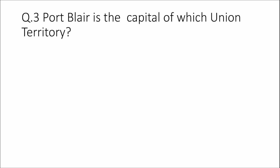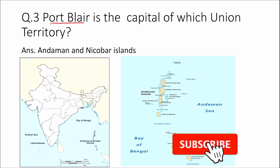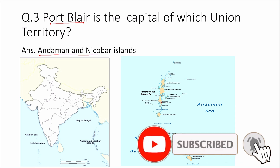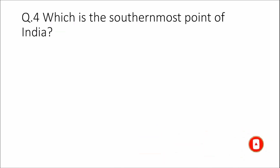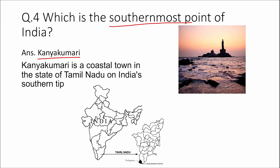Question 3: Port Blair is the capital of which union territory? Answer: Andaman and Nicobar Islands. Question 4: Which is the southernmost point of India? Answer: Kanyakumari. Kanyakumari is a coastal town in the state of Tamil Nadu, on India's southern tip.